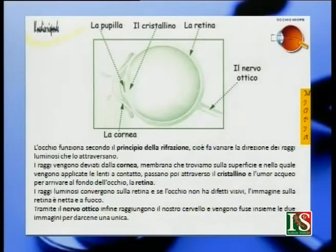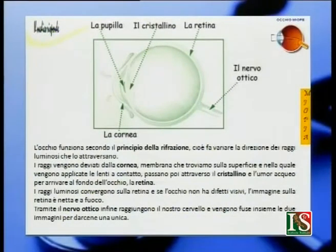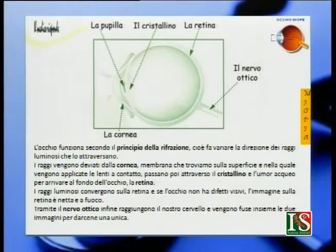In questa slide vediamo appunto la cornea, la pupilla, il cristallino, la retina e il nervo ottico. Quindi, dottore, che cos'è la miopia?